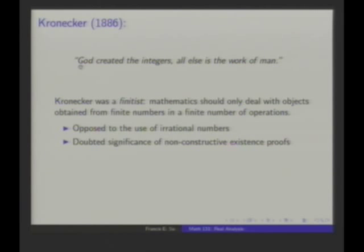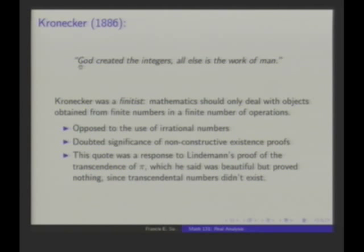The consequence of this belief is that Kronecker was opposed to the use of irrational numbers and doubted the significance of non-constructive existence proofs. Things we take for granted today — like the square root of 2 — would be something Kronecker had a real problem with. This quote was in fact a response to Lindenmann's 1882 proof that pi was transcendental, meaning it's not the root of a polynomial with integer coefficients. Kronecker's response was: 'That's a beautiful proof, but it's of no importance because, as we all know, transcendental numbers don't exist.'